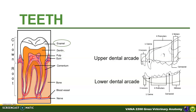Enamel is the hardest part of the tooth and the hardest part of the body. It is brilliant white in color. Dog is considered as brachydont, or those with short crown teeth. Cementum is a thin bone-like layer on the surface of the teeth. It holds the tooth firmly in the gum, and in dogs it is found only in the root of the teeth.